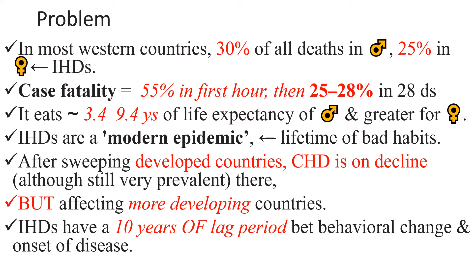Ischemic heart disease is a modern epidemic due to a lifetime of bad habits. After sweeping developed countries, CHD is on decline, although still very prevalent in western countries, but is now affecting more developing countries. Ischemic heart disease has a 10-year lag period between behavioral change and onset of disease.